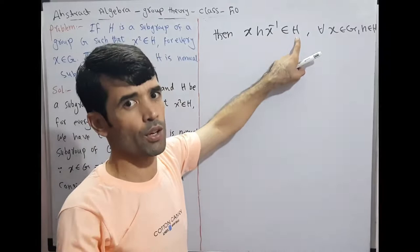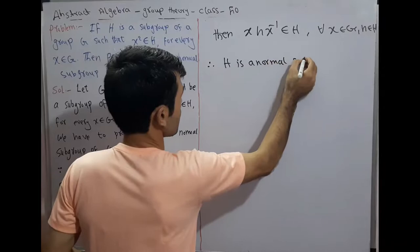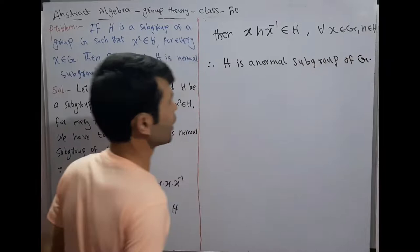This satisfies the definition of a normal subgroup: x times h times x inverse belongs to H for all x belonging to G and h belonging to H. Therefore H is a normal subgroup of G. Hence the proof is complete.